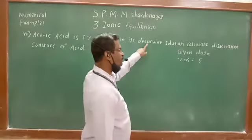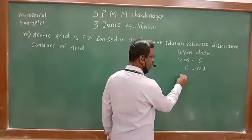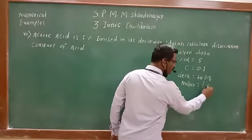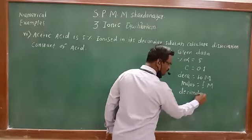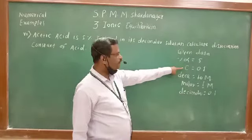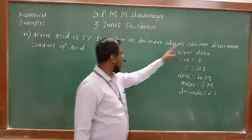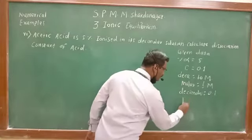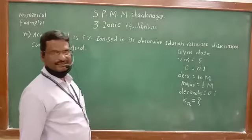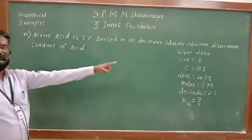While solving any problem, write the given data on the right-hand side. The given data: acetic acid solution where %α is given as 5%, ionized in its decimolar solution. Decimolar means 0.1 molar — you must know that decimolar equals 0.1 molar, just molar equals 1 molar. So concentration C of acetic acid is 0.1 molar. We have to calculate the dissociation constant KA.